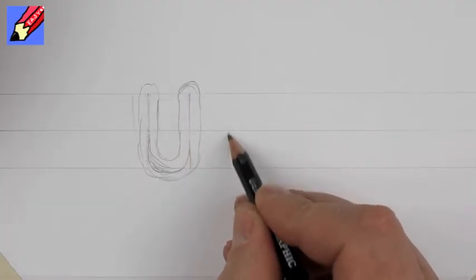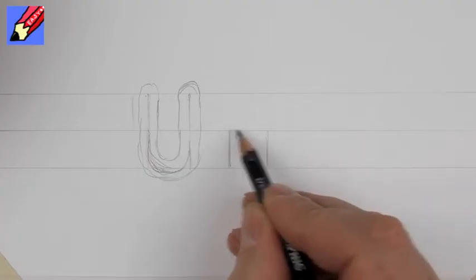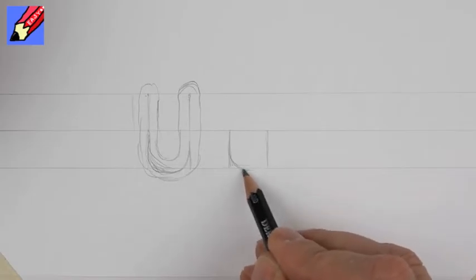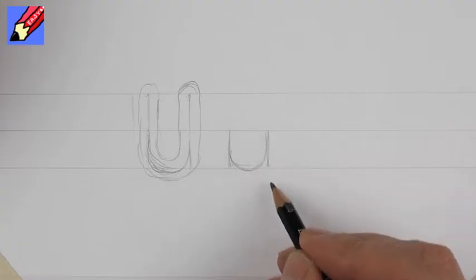For the lowercase u, draw that there and that there. Again, that's a square—the same width as the height. And again, go just slightly below like that.